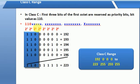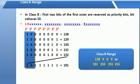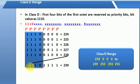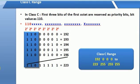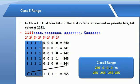For Class B, the first bit is 1 and the next bit is 0, giving the range up to 191. For Class C, you look at the first three priority bits — 1, 1, 0 — to identify a Class C address. This is the structure of the IPv4 address classification.